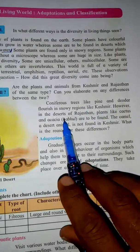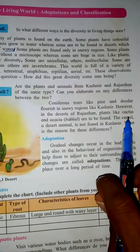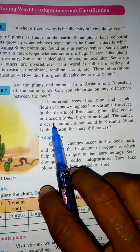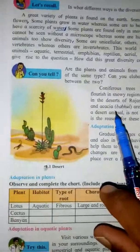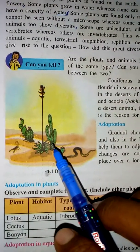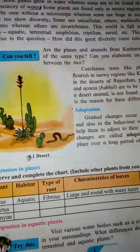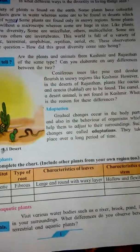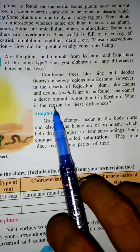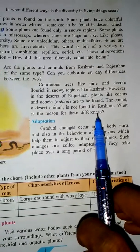How are these different in desert Rajasthan? In Rajasthan, cactus is found. The camel is a desert animal. What's the problem? The camel — a desert animal — is not found in Kashmir. What is the reason for this difference?